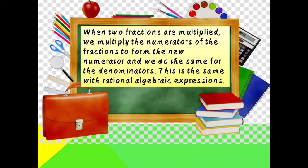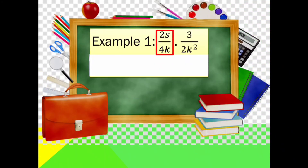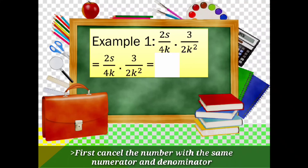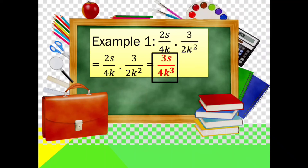When two fractions are multiplied, we multiply the numerators to form the new numerator and do the same for the denominator. This is the same with rational algebraic expressions. If there are common factors in both numerator and denominator, cancel them before multiplying. Example 1: 2s over 4k times 3 over 2k squared. Cancel the common factor 2, leaving s times 3, which is 3s, over 4k times k squared, which is 4k cubed. The final answer is 3s over 4k cubed.